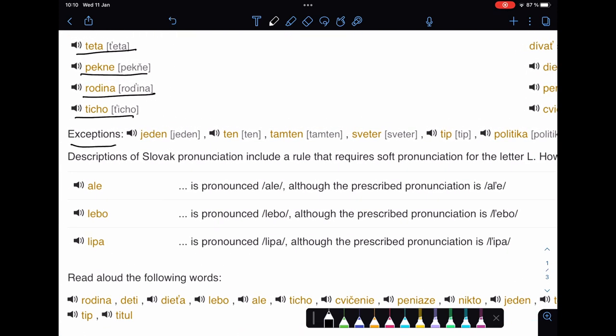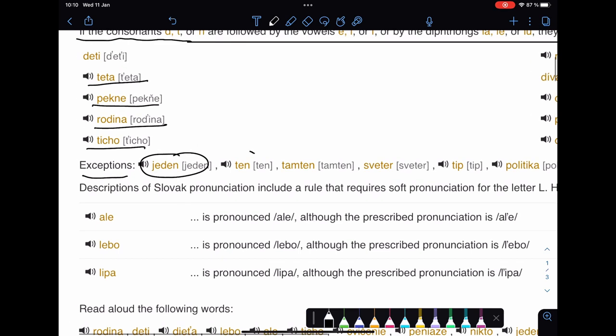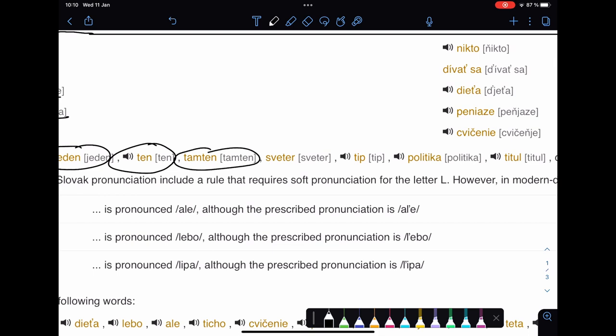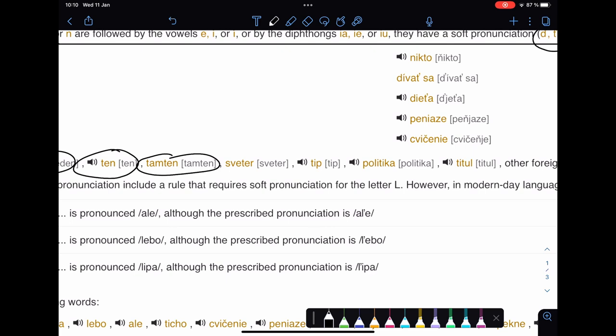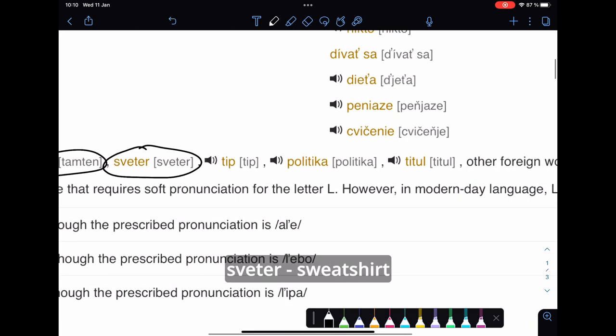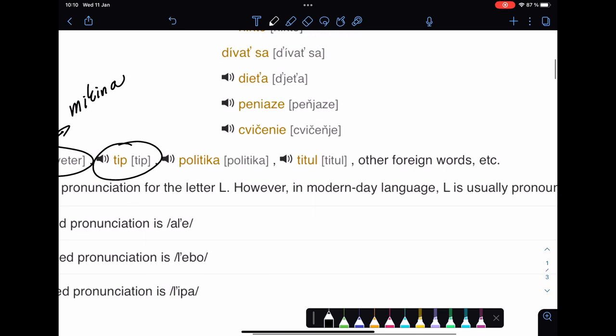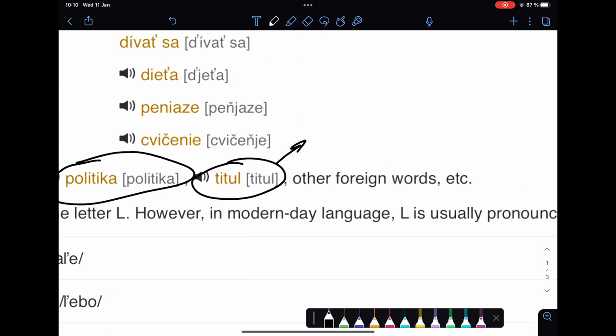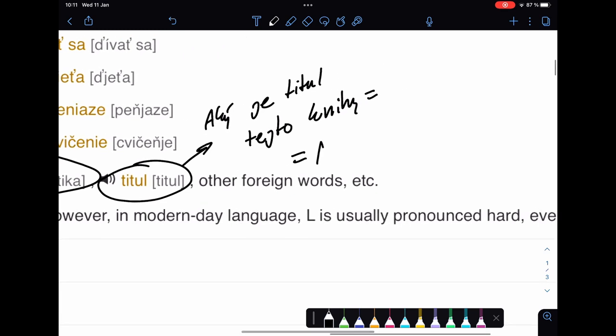There are words like exceptions: jeden which means one, then which means that, tamten which means also that but some kind of object or someone who is standing more far away, sweater, then tip, political, politics, title - for example title nejakej knihy.